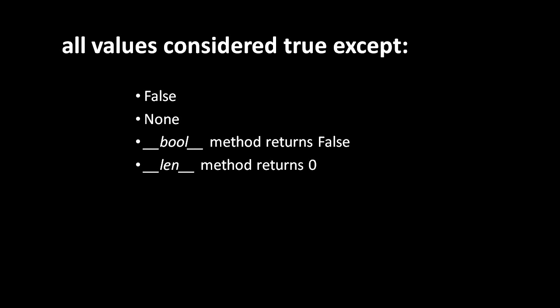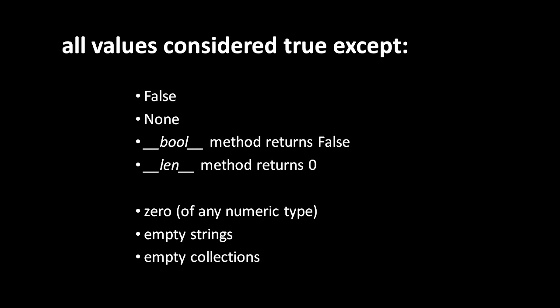If you have an empty list, an empty dictionary, or an empty string, their truth value is false. To sum it up: all objects in Python have a truth value of true except for the Boolean value false, the special value None, numbers equal to zero, empty strings, and empty collections. For any classes you define, the truth value is determined by the __bool__ or __len__ method.